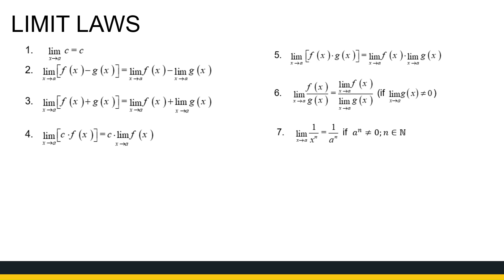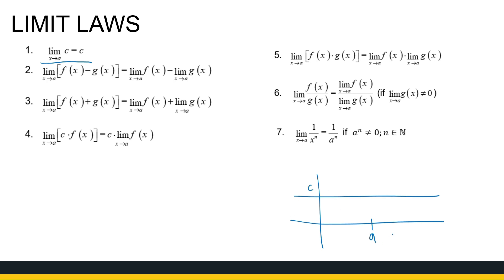The first law is: the limit as x approaches a of a constant function c is just the constant c. Intuitively, that makes sense — if I've got a constant function c as x approaches a, my y-values just keep going to c. It stays constant at c, so that limit value is c.